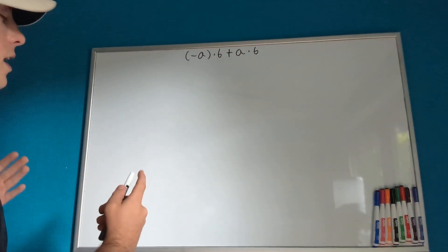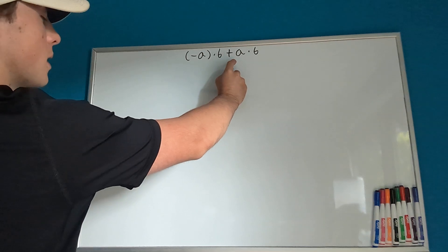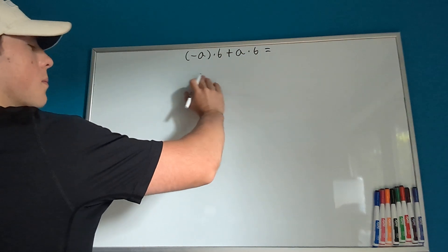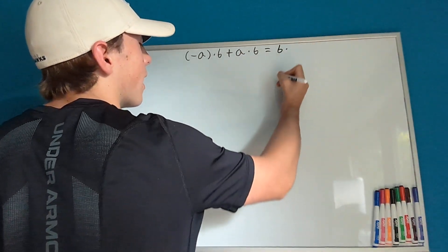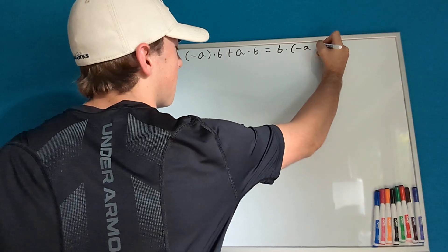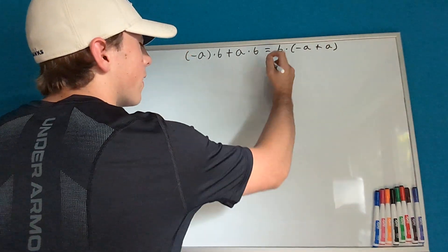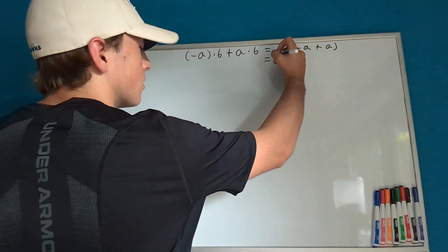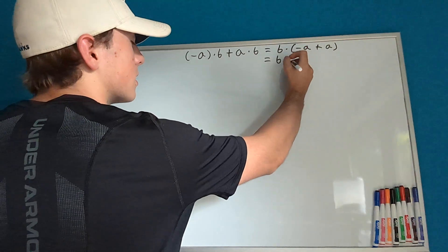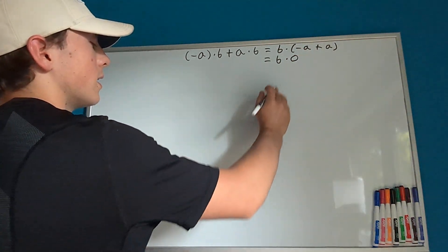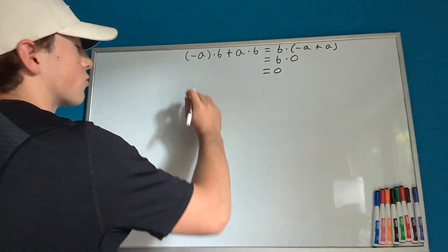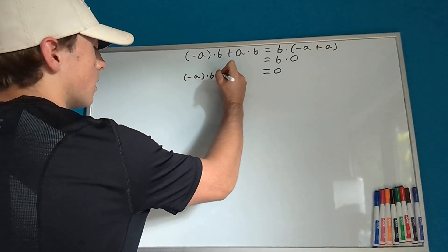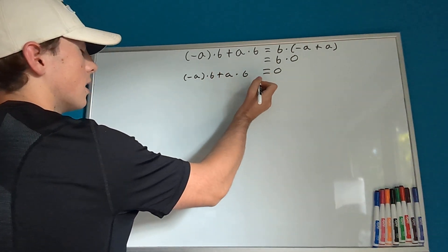It's all going to start with negative a times b plus a times b. What can we say that this equals? We can actually factor out a b, so we can say that this equals b times negative a plus a. And then negative a plus a equals zero, so this just equals b times zero. Any number times zero equals zero, so negative a times b plus a times b equals zero.